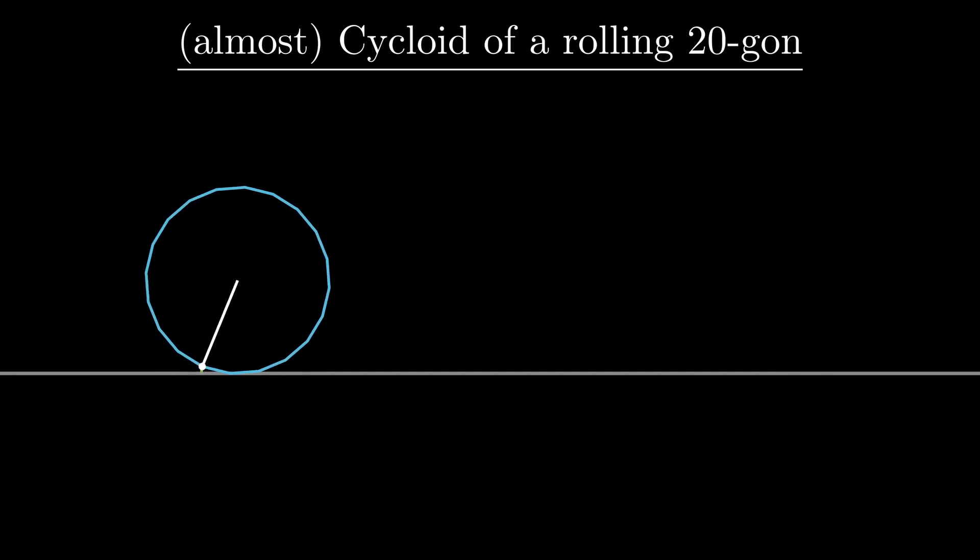By the time we reach a 20-sided regular polygon, the resulting curve is almost indistinguishable from a cycloid.